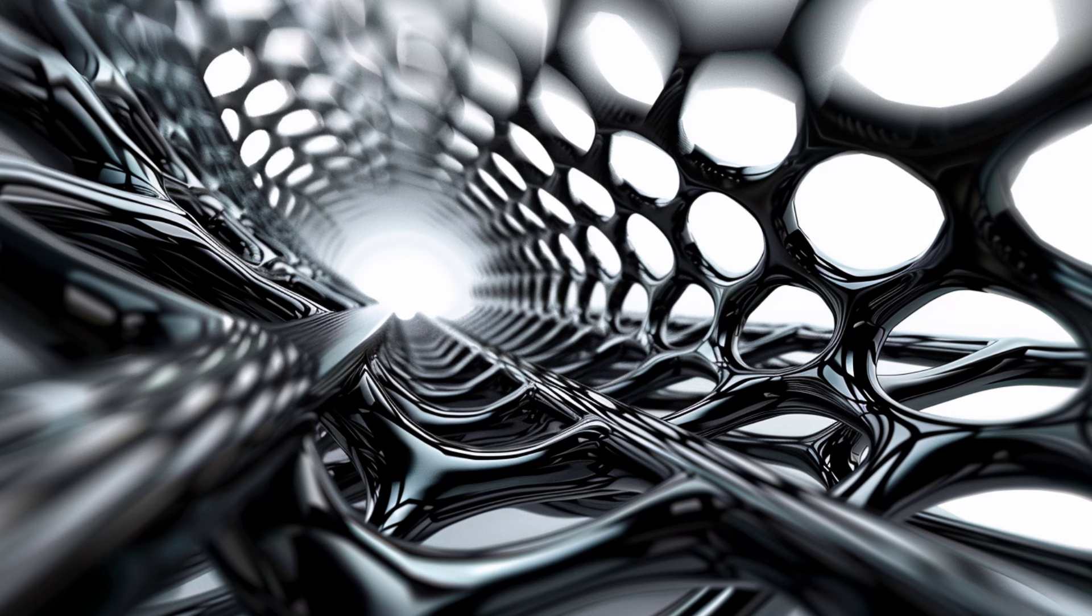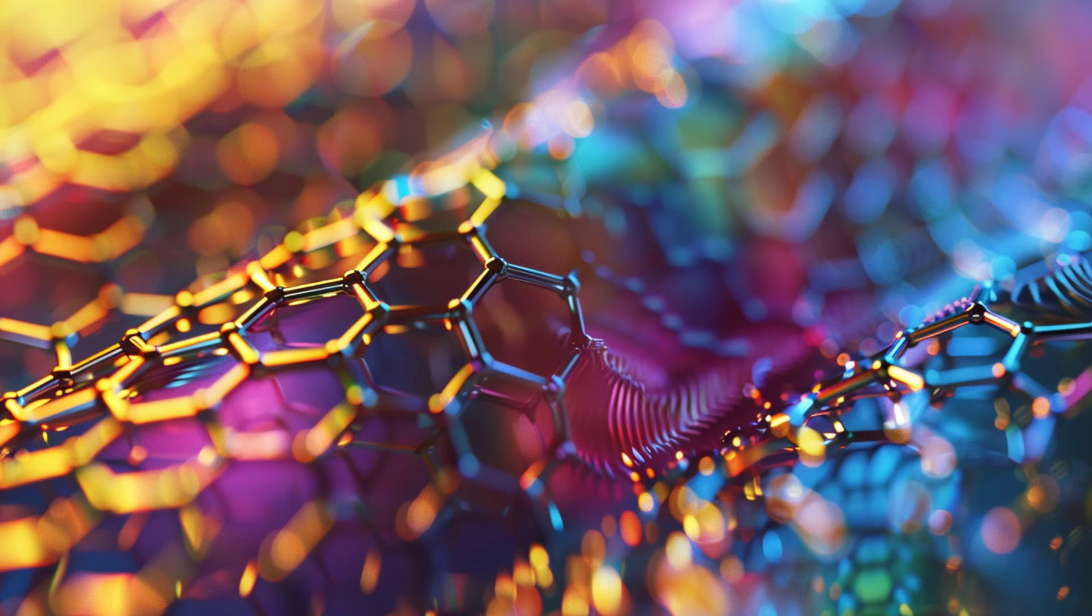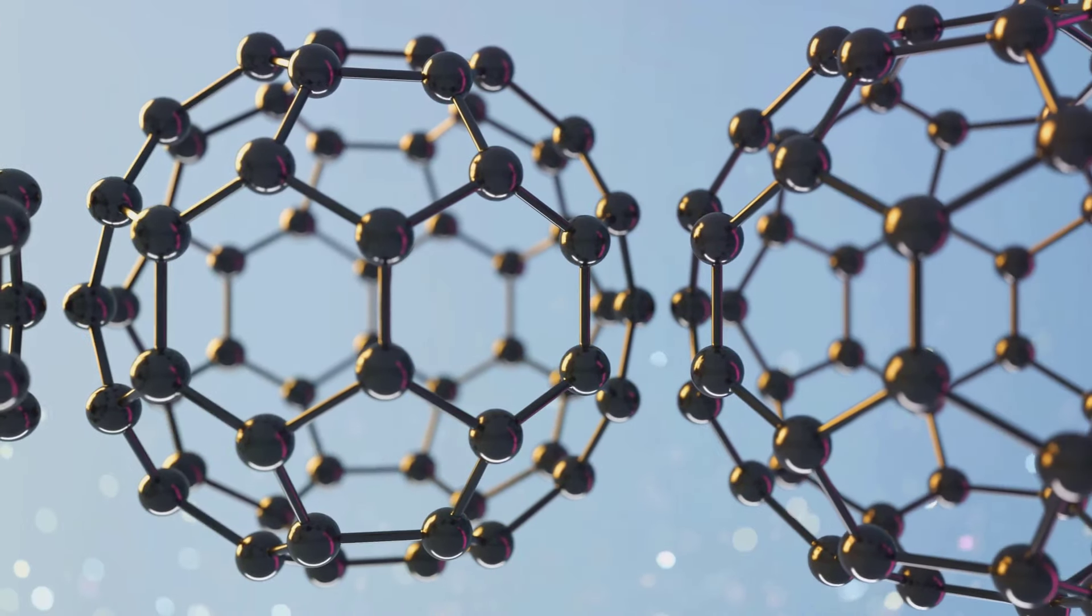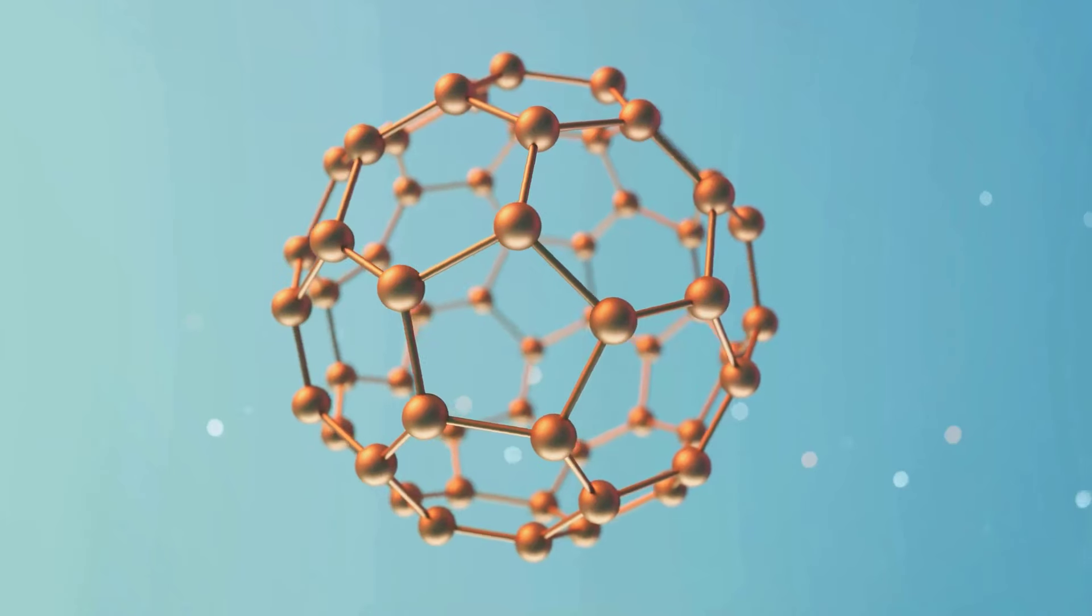Next, carbon nanotubes, or CNTs, were discovered in the mid-1990s. These microscopic tubes are made of rolled-up sheets of graphene and have diameters as small as one nanometer. That's one billionth of a meter.